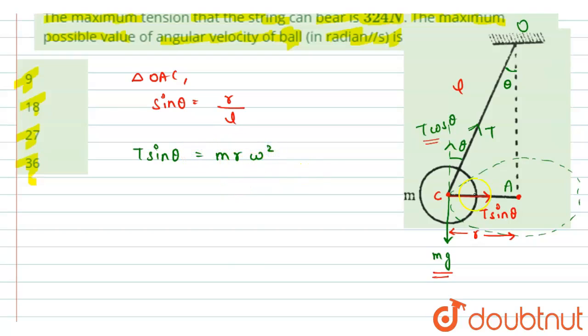Where R is the radius of this circle and omega is the angular velocity. So from here, I can write T equals to M into R over sin theta into omega square. Now R by sin theta - see here, if I take the value of L, L will come out to be R by sin theta.